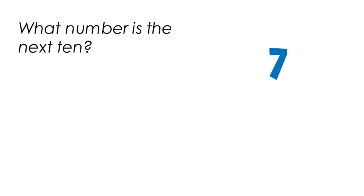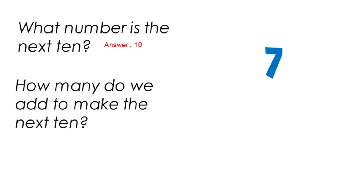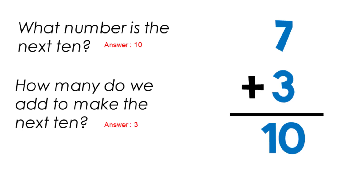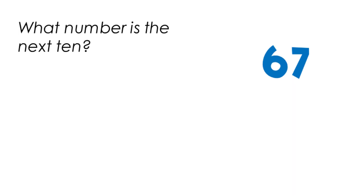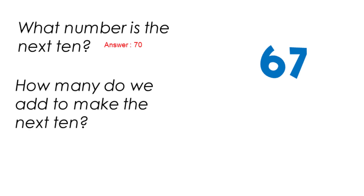What number is the next 10 up from 7? Answer: 10. How many do we add to make the next 10? We added 3. 7 plus 3 equals 10. What number is the next 10 up from 67? The next 10 is 70.